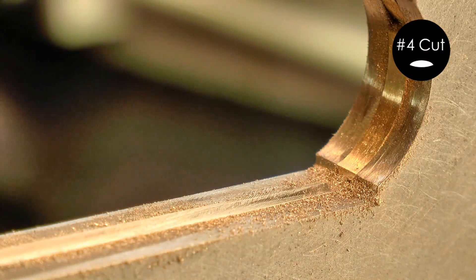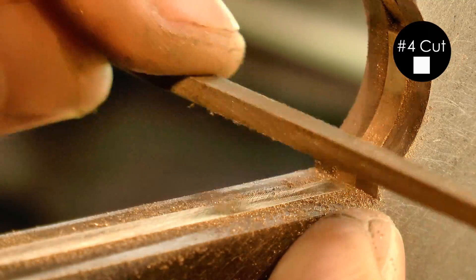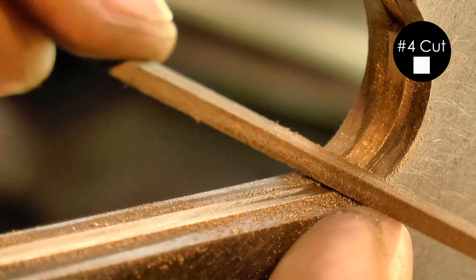Now that the bulk of the metal is gone and it's basically in shape, I can use number four cut files and take it right to the limit of the guide.